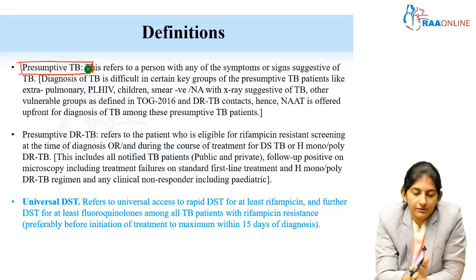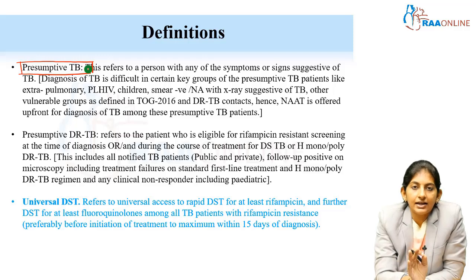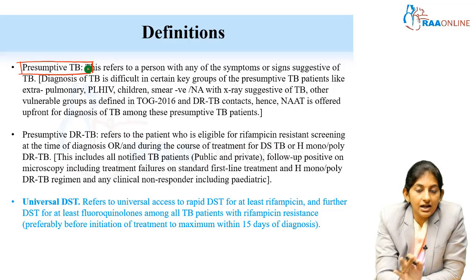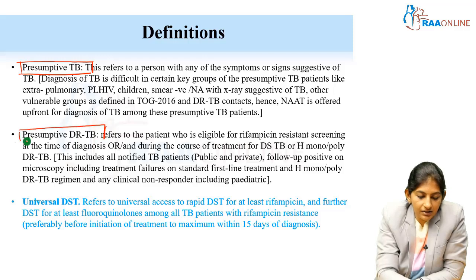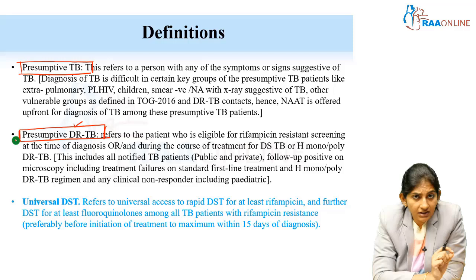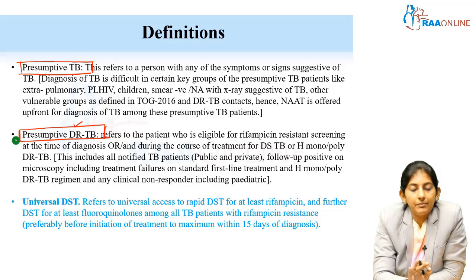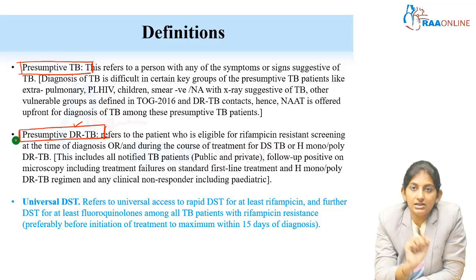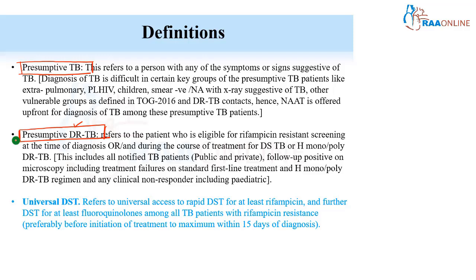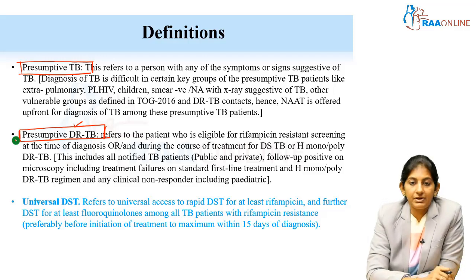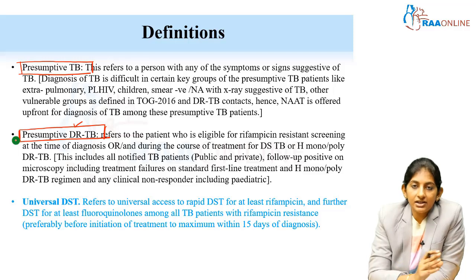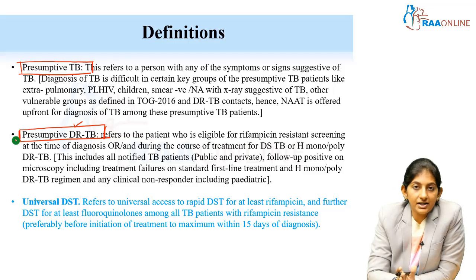Presumptive DR-TB — DR means drug resistance. This refers to anyone who is eligible to be labeled as rifampicin-resistant. This may be because the child had a previous treatment that failed, or is a defaulter or a non-responder. Clinically, before testing, you can write it as a presumptive drug-resistant TB.